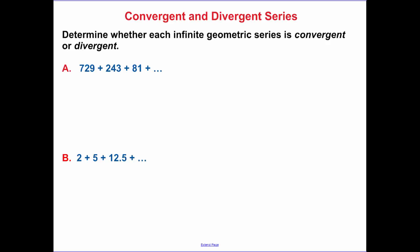Determine whether each infinite geometric series is convergent or divergent. So find your common ratio. Your common ratio is 243 divided by 729. When I find that, we get that value to be one third. Just do a quick check that 243 times one third equals 81. So yes, we have a common ratio. This is convergent.